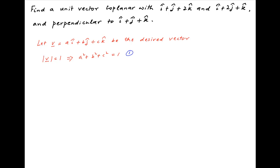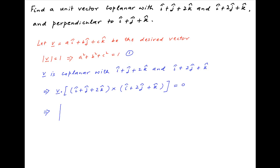Let's call this result 1. Now we are given that vector v is coplanar with vectors i plus j plus 2k and i plus 2j plus k. The condition for coplanarity is that the scalar triple product of vector v with these two vectors is equal to 0. The scalar triple product can be expressed in determinant form, with the first row being the components of vector v, which are a, b, and c. The second row is the components of vector i plus j plus 2k, and the third row is the components of vector i plus 2j plus k.